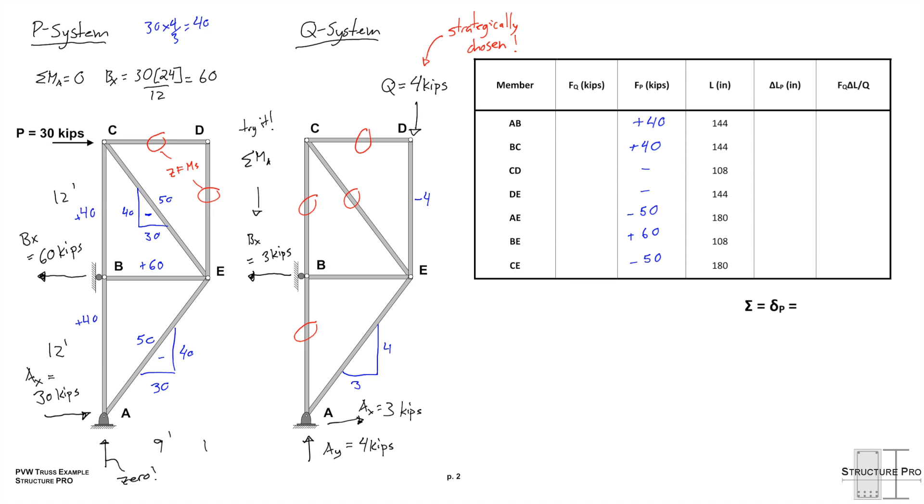So, that's a 3, 4, 5 triangle there. That means that there's 5 kips in compression, member AE. Member BE is easily solved for looking at Bx. So we can populate this FQ column of the table.